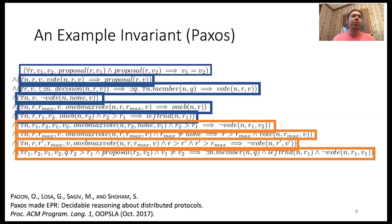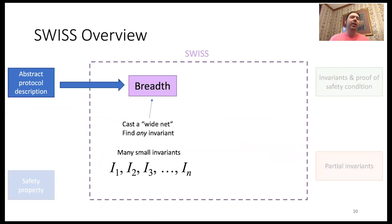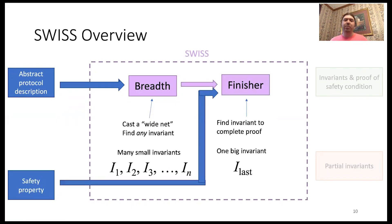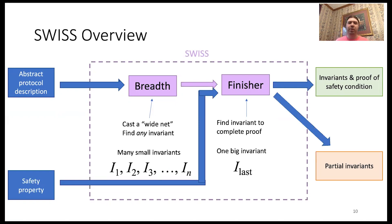We designed SWISS to find invariants with a structure similar to this one, and we designed it as a two-phase algorithm. The first phase, which we call BREATH, takes as input the abstract protocol description and casts a wide net to find any and all invariants it can — this phase tends to find many small invariants. The second phase, which we call the finisher, also takes as input the safety property, and its goal is to find one more invariant to complete the proof. If it succeeds, it outputs the invariants and proof; otherwise, we still have the invariants from the first phase.